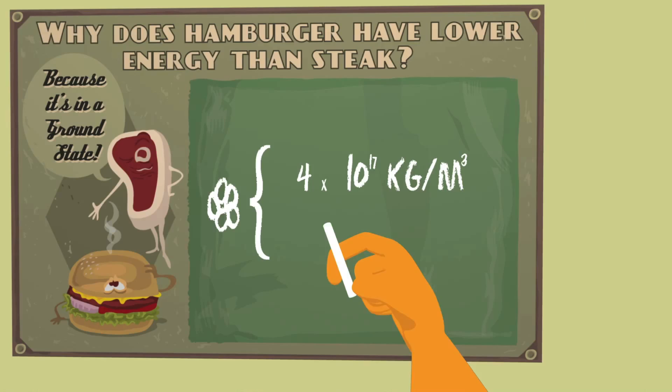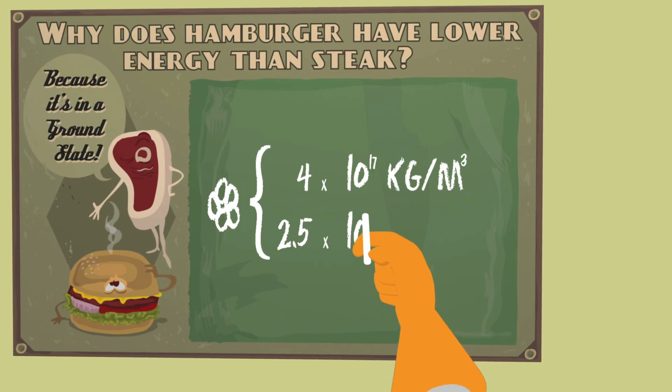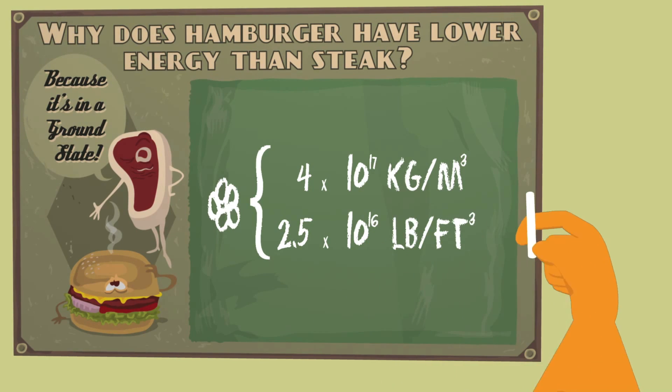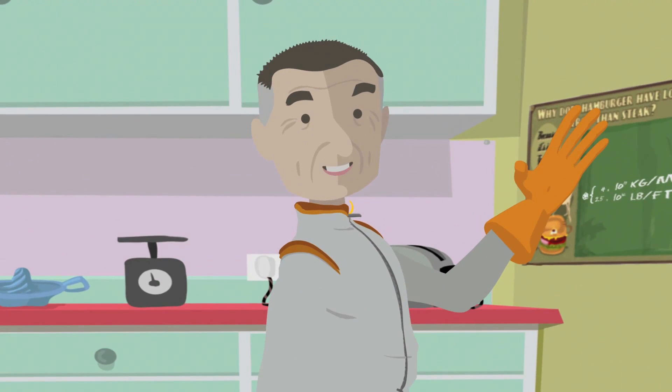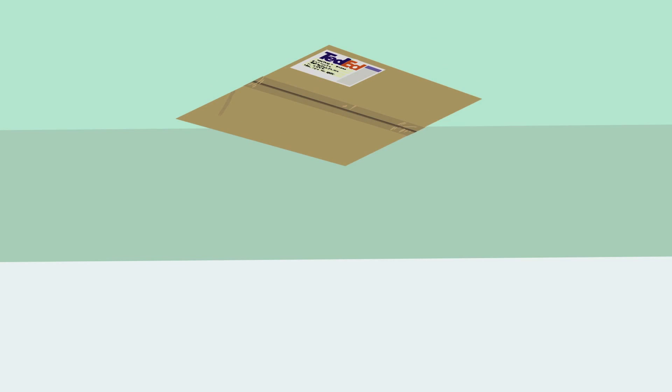Okay, I'll put it in English units: 2.5 times 10 to the 16th pounds per cubic foot. Okay, that's still kind of hard to figure. Okay, here's what I want you to do. Make a box that is one foot by one foot by one foot.